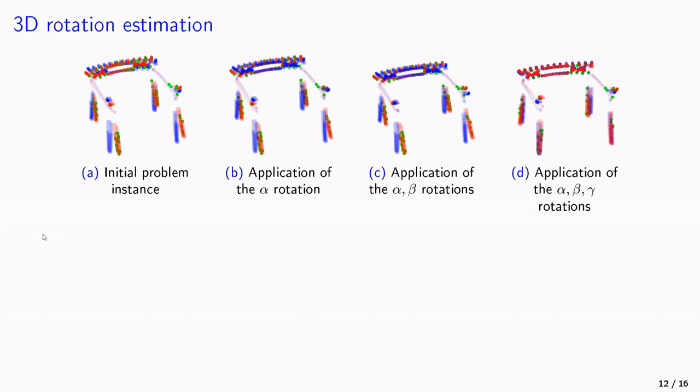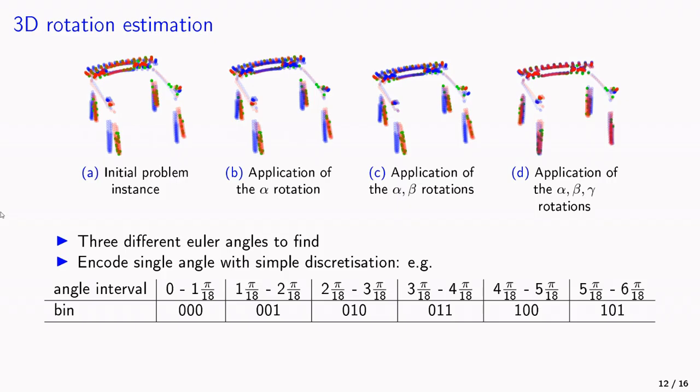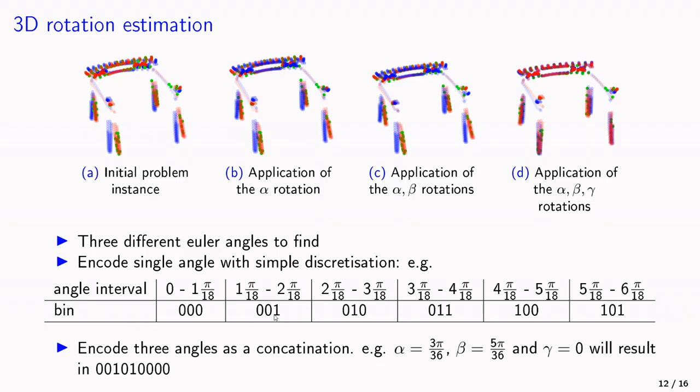Here we had three neural networks that consecutively predicted these Euler angles. This can be seen in these figures here. And the Euler angles are encoded as follows. So if we have some angle that is between pi divided by 18 and two times pi divided by 18, then we have the binary encoding 0, 0, 1. And for these three angles, we have a concatenation of them after each other.